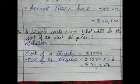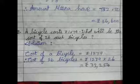8th question. A bicycle costs rupees 1279. What will be the cost of 26 such bicycles? One cycle cost they are given. They are asking us to find it for 26 such cycles. So first one is solution.